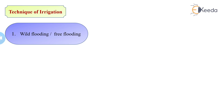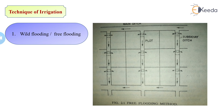Our first technique or mode of application of water is wild flooding, also called free flooding. As you can see in the picture, water is diverted from natural resources through main ditches. The main ditch is divided into subsidiary ditches, and there are feeding points situated at these subsidiary ditches, through which water is allowed to flow onto the land.